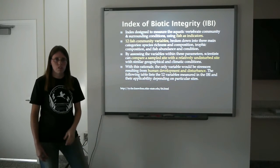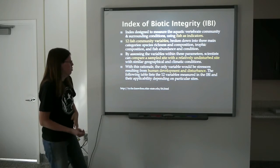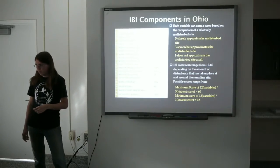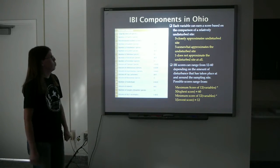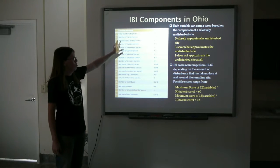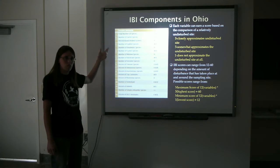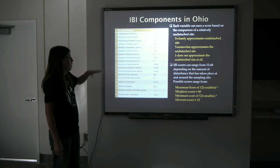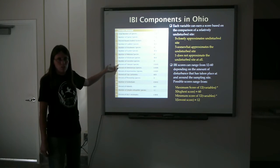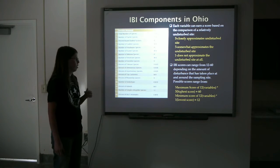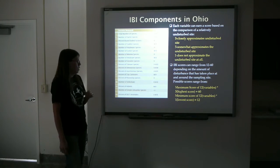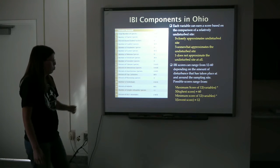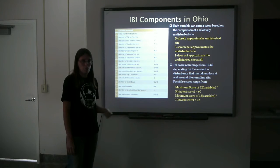You want to be comparing similar drainage areas and similar habitat types. These are the 12 components included in the IBI. Some are specifically related to species — species of sunfish, species of suckers, species of darters. Some are related to pollution tolerance: are they tolerant or intolerant to pollution? What are they eating — are they omnivores, do they only eat insects, do they eat other fish, are they a top carnivore? And pioneering species — these are the species that will be there first in a very small headwater stream.